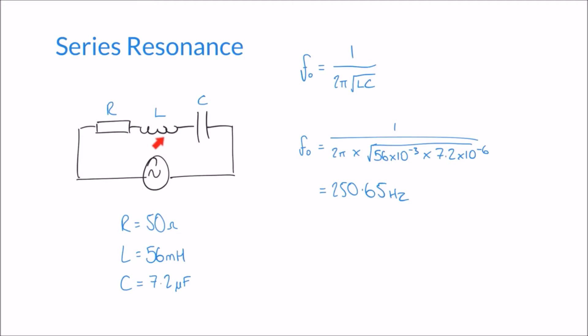So in this circuit, operating at 250.65 hertz means the reactances of the inductor and capacitor cancel each other out, giving us effectively a circuit that contains only a resistor. Because the reactances have cancelled, we no longer have reactance in our circuit, which makes our impedance as small as it can possibly be — reduced to resistance only. This means our current is actually as large as it can be; we get very large currents at the resonant frequency.